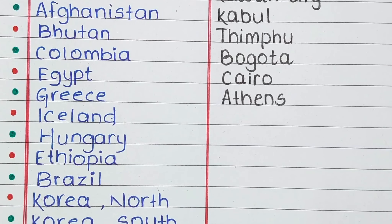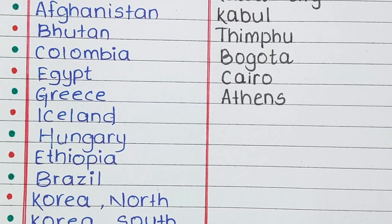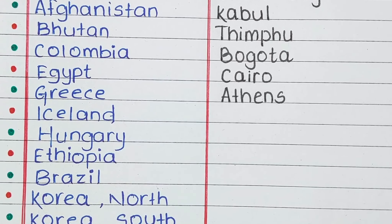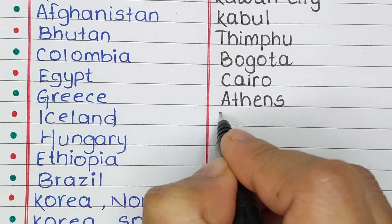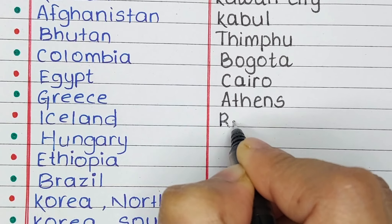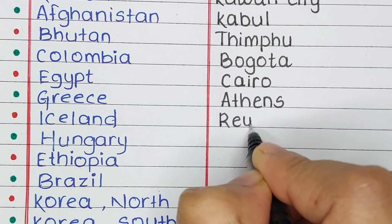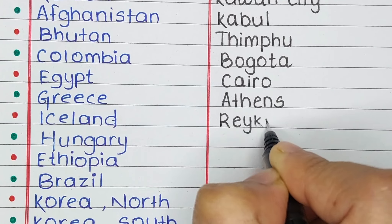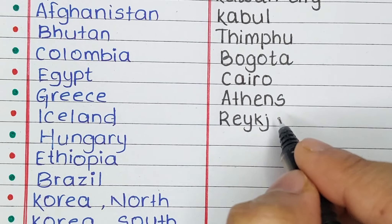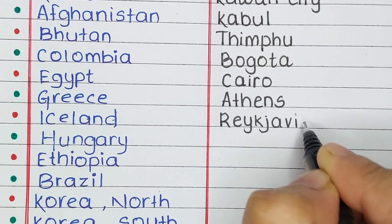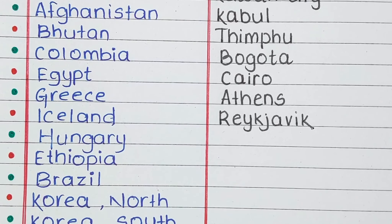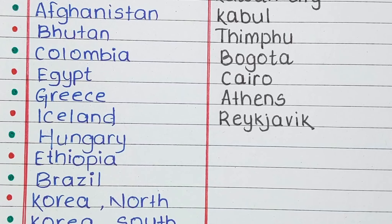Next is Greece. The capital of Greece is Athens. Next is Iceland. The capital of Iceland is Reykjavik.